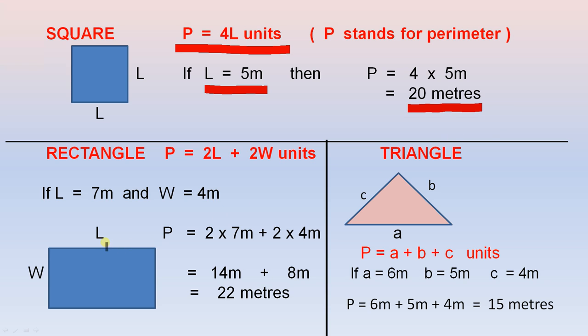For the rectangle, if the length is L and the width is W, the perimeter of the rectangle is 2L plus 2W units, because there are 2 lengths and 2 widths.